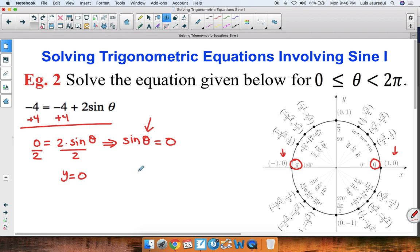Therefore our solutions are 0 and π radians. And this is how we solve basic trigonometric equations involving sine. Thank you for watching and have a wonderful day.